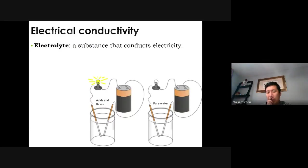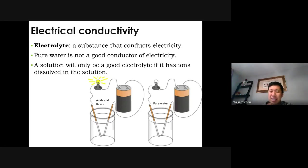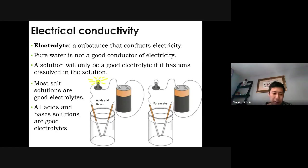Acids and bases are all electrolytes. Electrolytes conduct electricity just like ionic compounds dissolved in water. You can actually use that, hook up a battery, and see the light bulb glow. But pure water doesn't have this effect because pure water doesn't have ions. So a solution will be a good electrolyte if it has ions. Ionic compounds dissolve to form ions, so that's an electrolyte. Acids and bases also dissolve to form ions, hydrogen ions and hydroxide ions, so they're also good conductors of electricity.